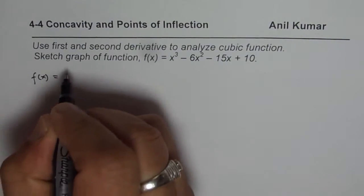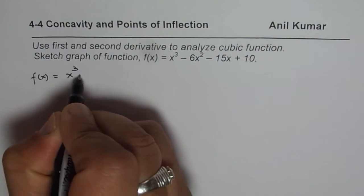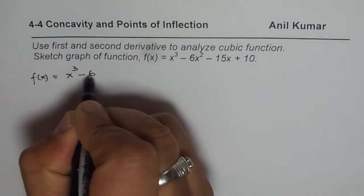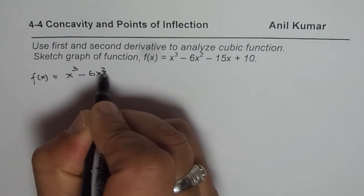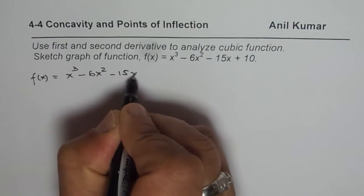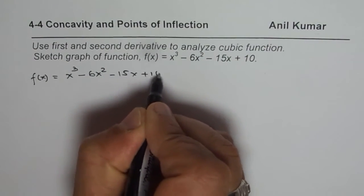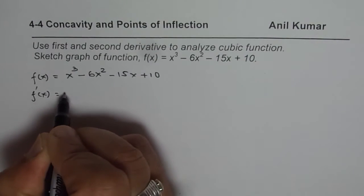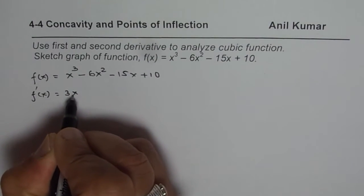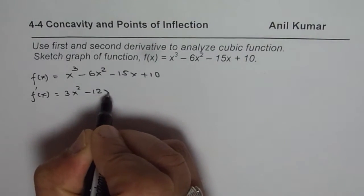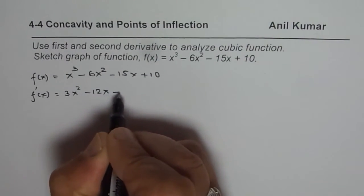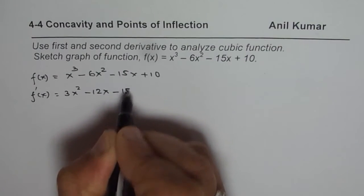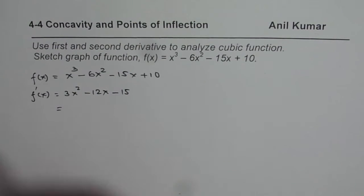So f(x) is given to us as x³ − 6x² − 15x + 10. The first derivative is 3x² − 12x − 15. Now we can factor this to find the zeros.